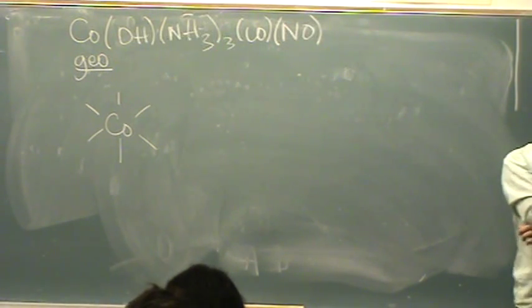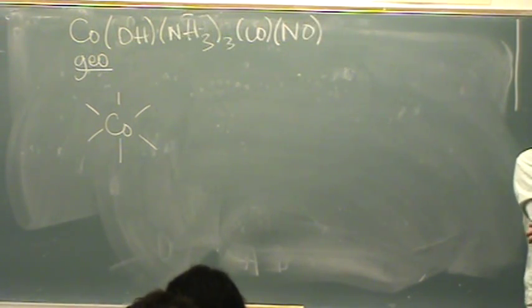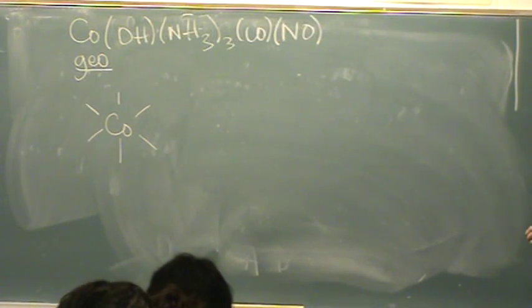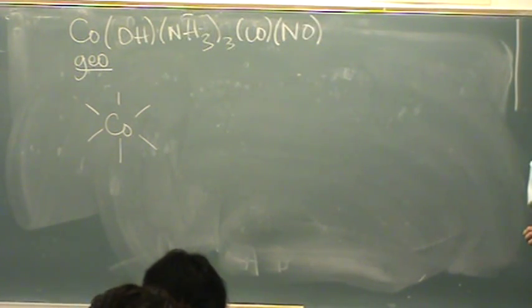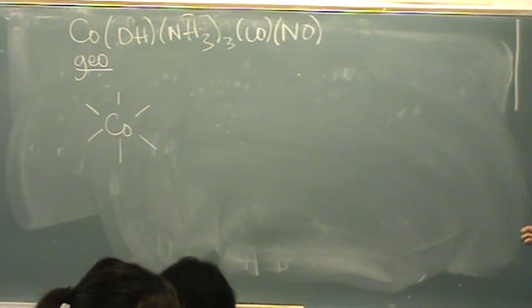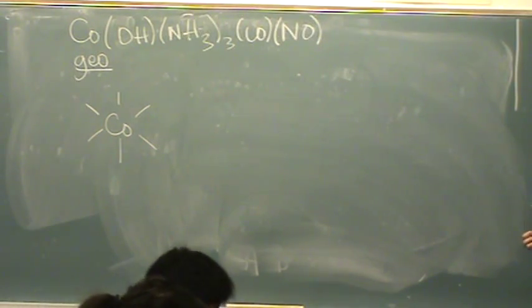Whenever I have three the same, I'm talking about fac and mer. I don't have any two that are identical, so it's not cis and trans. The only possible geometric isomers are fac and mer.